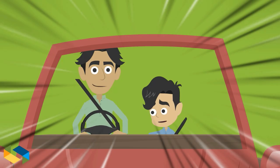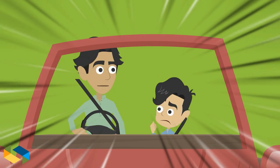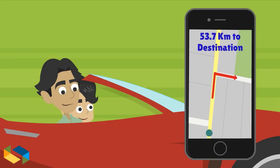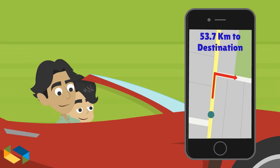How far we still have to go dad? Let's find out from our GPS navigator. In 100 meters turn right, go straight for 53.7 kilometers to reach your destination.